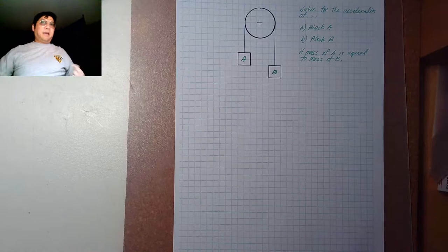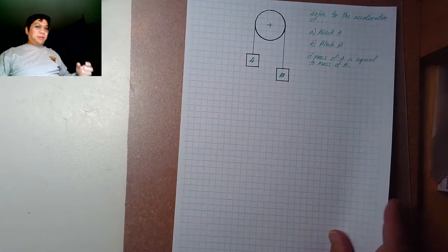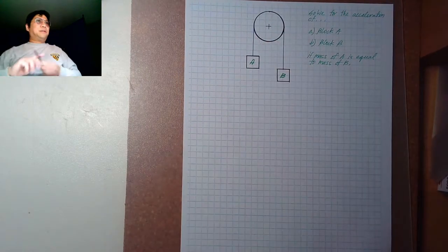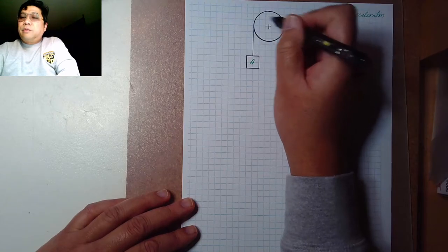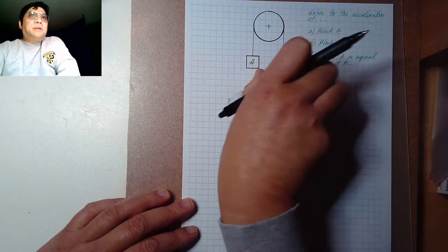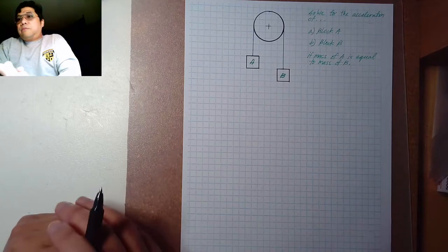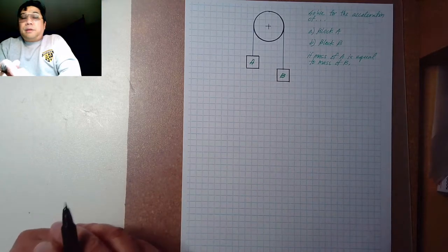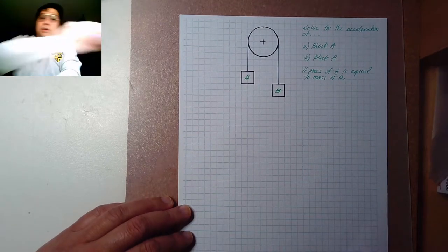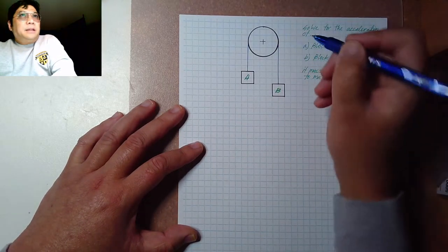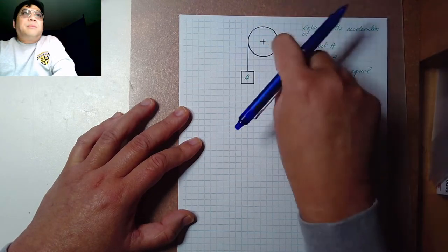Welcome back. This time we will be working on a different problem — a different scenario. This has something to do with Atwood's machine. An Atwood's machine is a pulley with a string over it and two masses connected from each side. We will go over different conditions today, but the most important thing is to remember the major assumptions you must consider if they're not indicated.